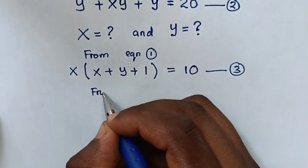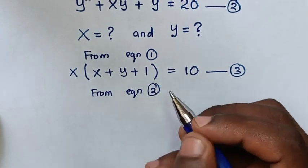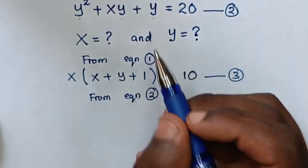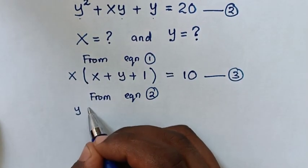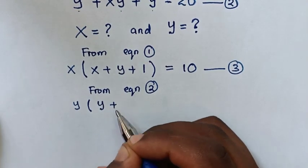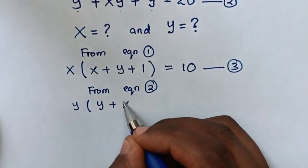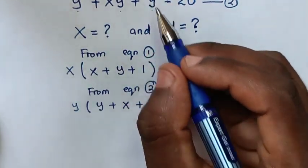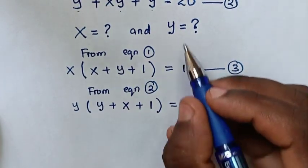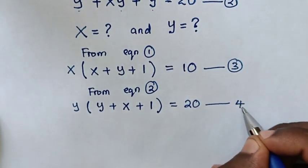From equation 2, y is common. So we take y out of bracket, then y plus x plus 1 in bracket is equal to 20. We let this equation 4.